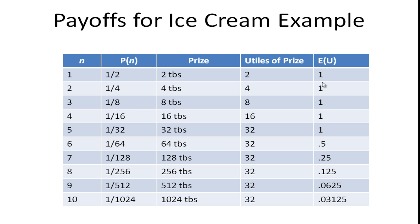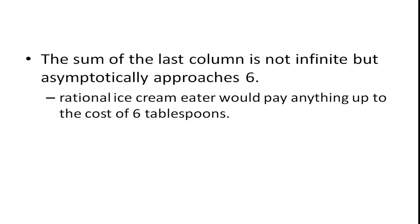The probability times the utils of the prize gives us an expected utility of one in the early rounds. But once we get to n equals six — six tosses of the coin — the probability is one sixty-fourth, you're only getting 32 utils of satisfaction, so the expected utility is 0.5. If you work this out, the sum of the last column is not infinite but actually asymptotically approaches six. So the rational ice cream eater would pay anything up to the cost of six tablespoons to play this game — a little more reasonable, though possibly still high.